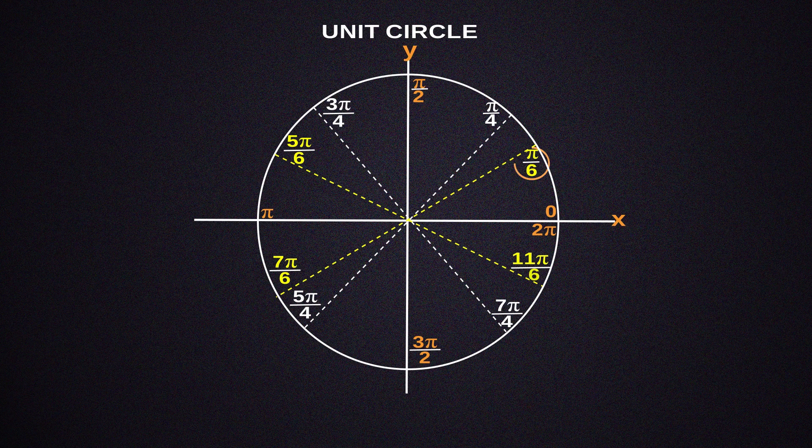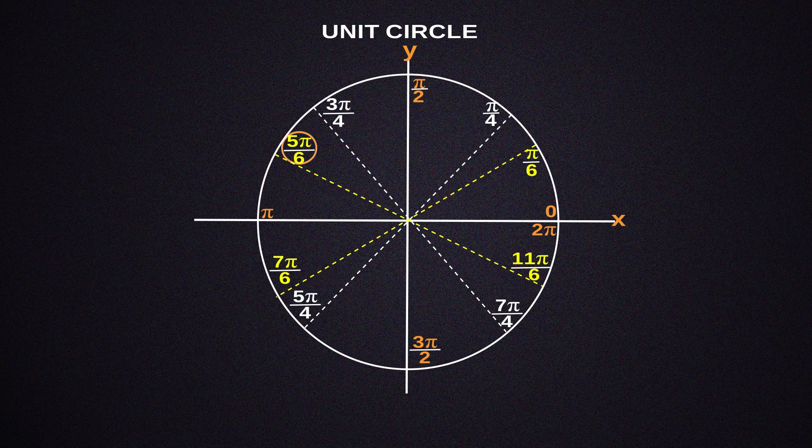π/6 is the first value. This results in 5π/6 if we then reflect it on the opposite side of the axis, then 7π/6 and 11π/6 down here.